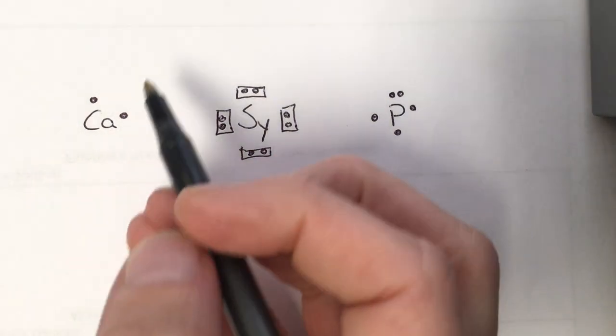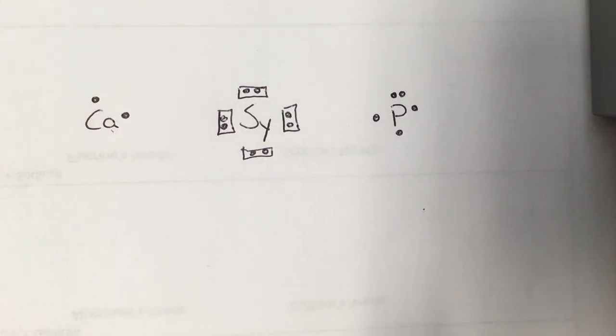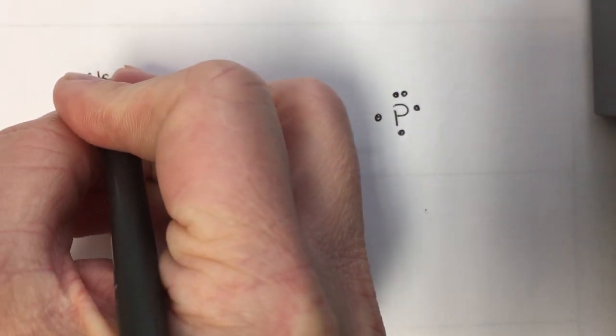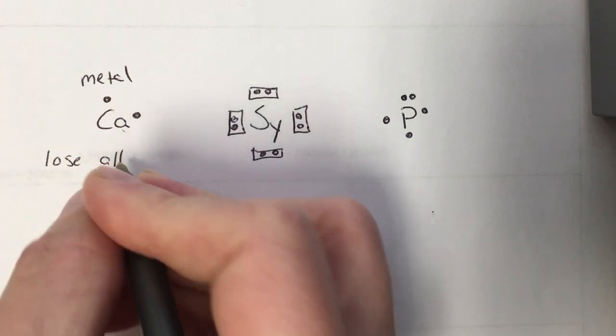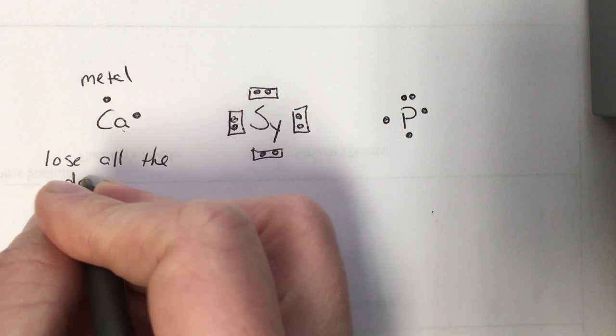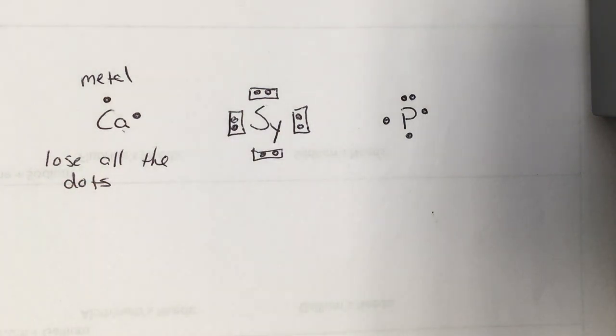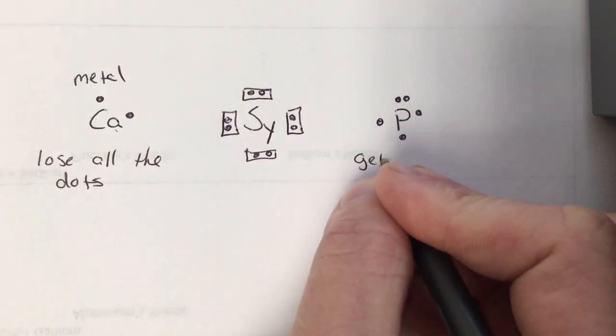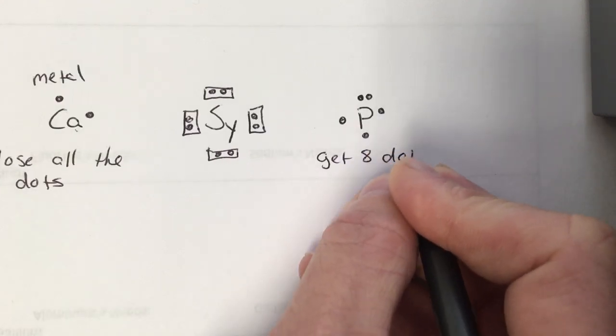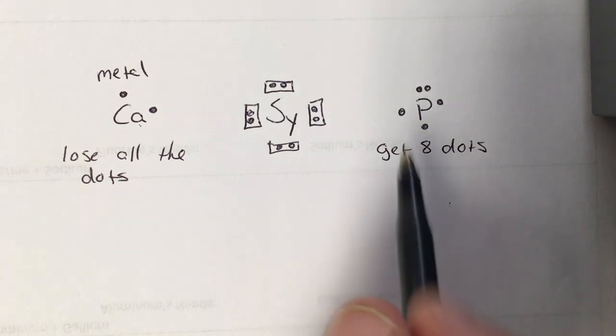Now, when we're talking about ionic bonding, we've got these metals and non-metals. We have to remember what they're going to have to do to become stable. Because this is a metal, it's going to have to lose those two dots. So my calcium is going to lose all the dots it has. For the non-metal, the goal is to get eight dots. So my non-metal here is short three. We need to pair up the rest of those electrons. We need to get three more dots so we get eight.